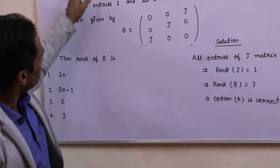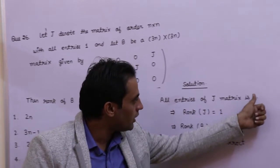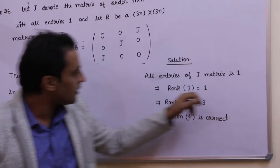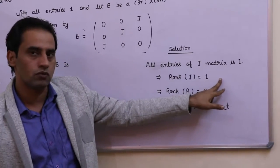Now J is N cross N matrix with all entries equal to 1. Hence rank of J must be equal to 1.